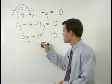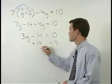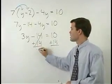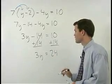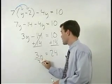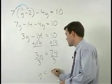By adding fourteen to both sides, which gives us three y equals twenty four, and dividing both sides by three, which gives us y equals eight.